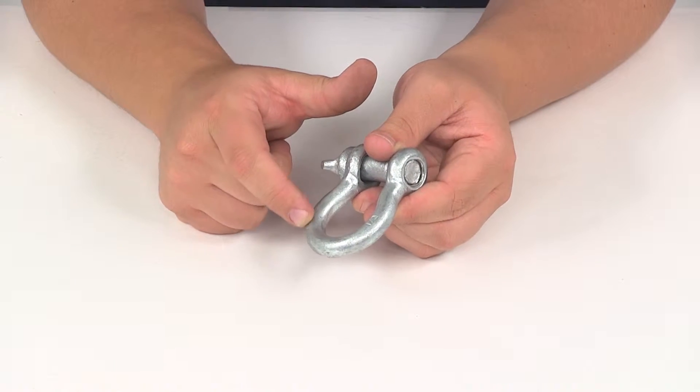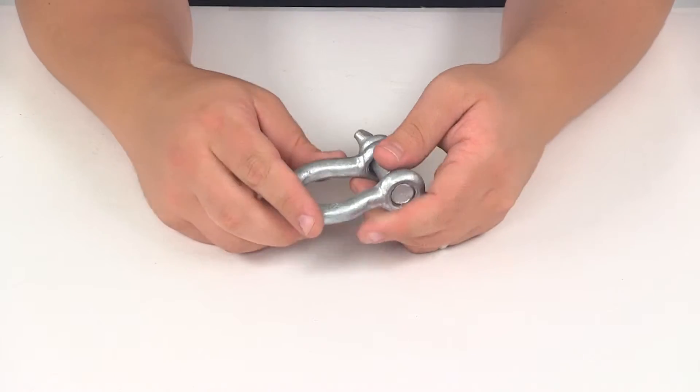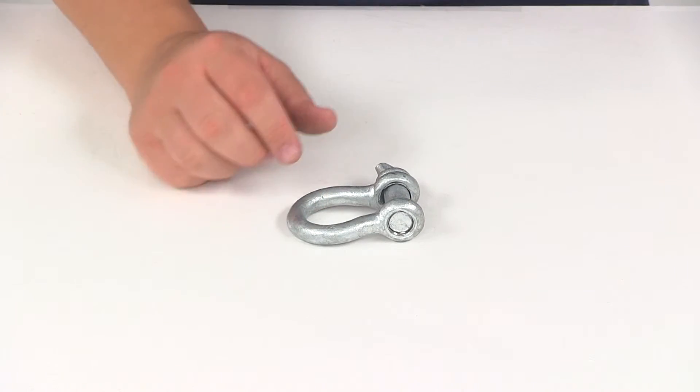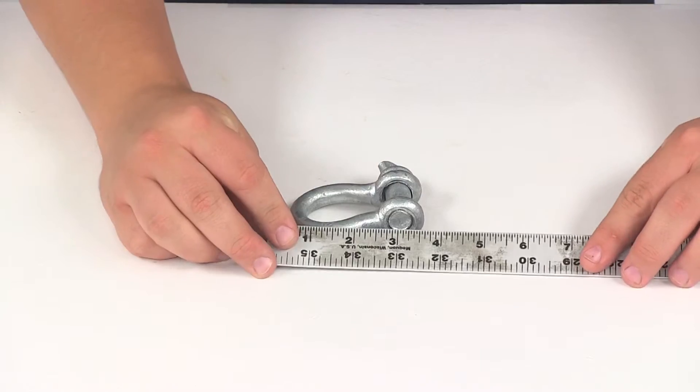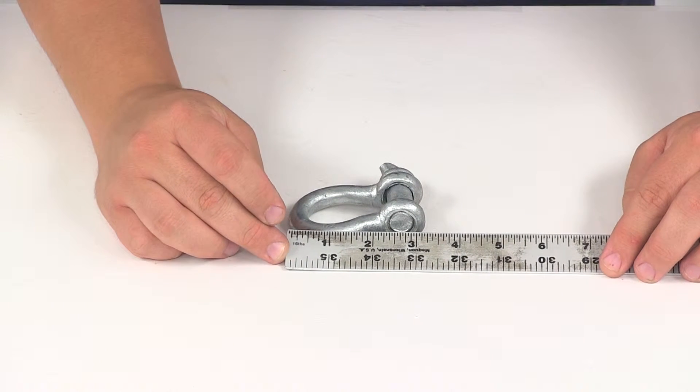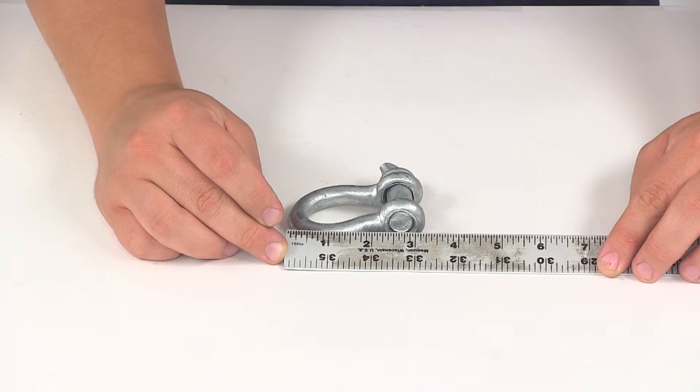The diameter of the shackle itself is going to measure about a half an inch. If we take a look at the overall length measuring from edge to edge, this point here to this point here, that's going to give us a measurement of about three and one quarter of an inch.